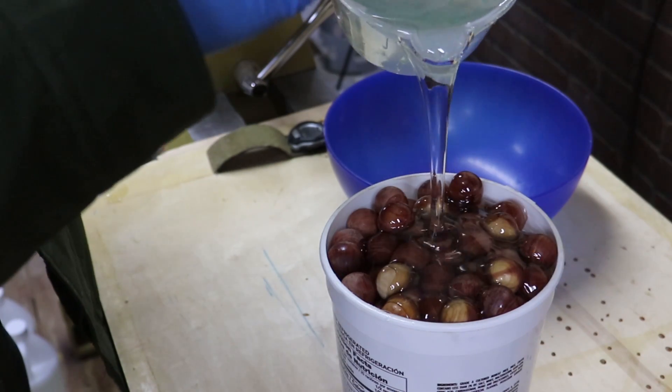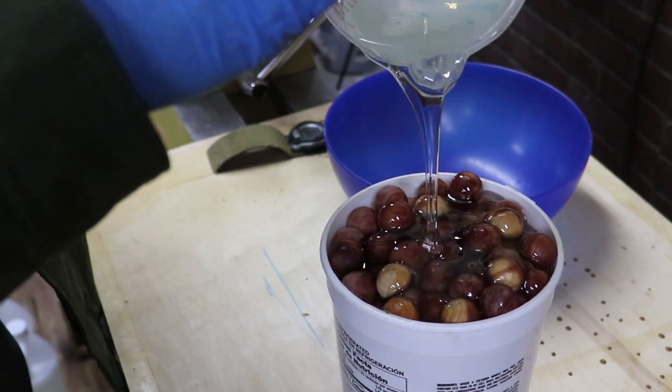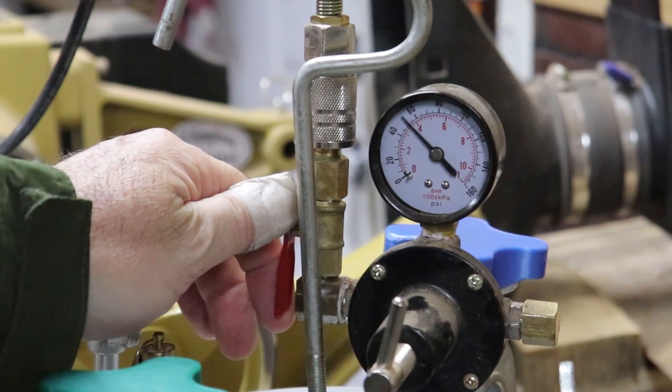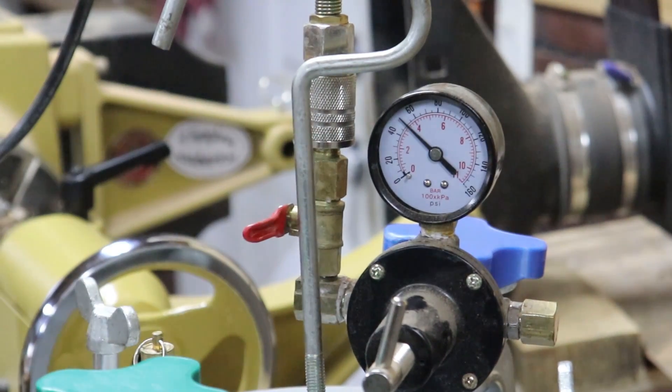So I poured the green in first and then followed it with a whole bunch of clear. And the idea was just to kind of make it a graduated green to clear vessel.